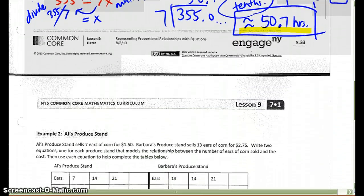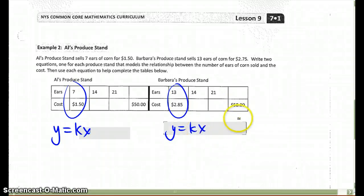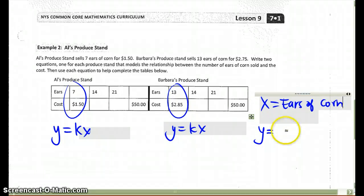Let's go to the back of the worksheet. We have Al. He has a produce stand. 7 ears of corn for $1.50. There's our first ratio that they gave us. Then Barbara has a stand, and she sells 13 for $2.85. So we're going to write two equations, one for Barbara, one for Al, and then we're going to use the equations to finish the table. Our equation will both be y equals kx. Our x is going to be for both of them, the ears of corn. y is going to be the cost in dollars for both equations. Now we just have to find our k.